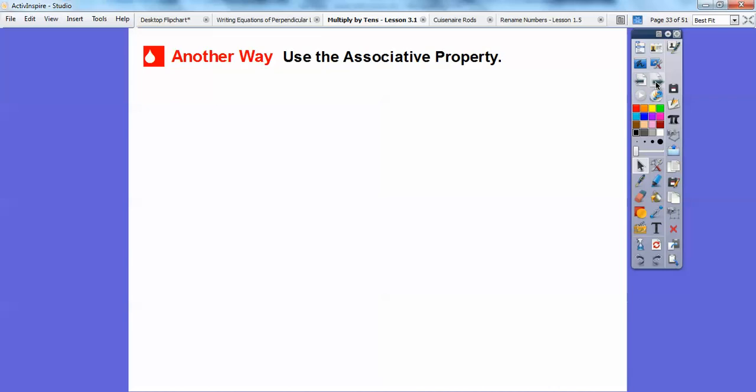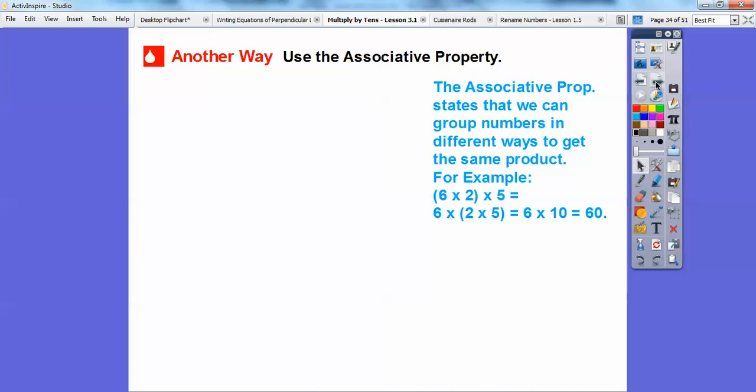Another way is to use the associative property. And you're thinking, well, what's the associative property? Well, the associative property just states that we can group numbers in different ways to get the same product. So here's a really good example. 6 times 2 times 5 is the exact same answer if we did 6 times and then we did 2 times 5 first. Well, it's easy to do 2 times 5 is 10. And then so we have 6 times 10. 6 times 10 is 60. And if we did 6 times 2 first, which is 12, 12 times 5 is also 60. But it's easier to see if I multiply these two guys first and get 10 and then 6 times that is 60. Nice and easy.